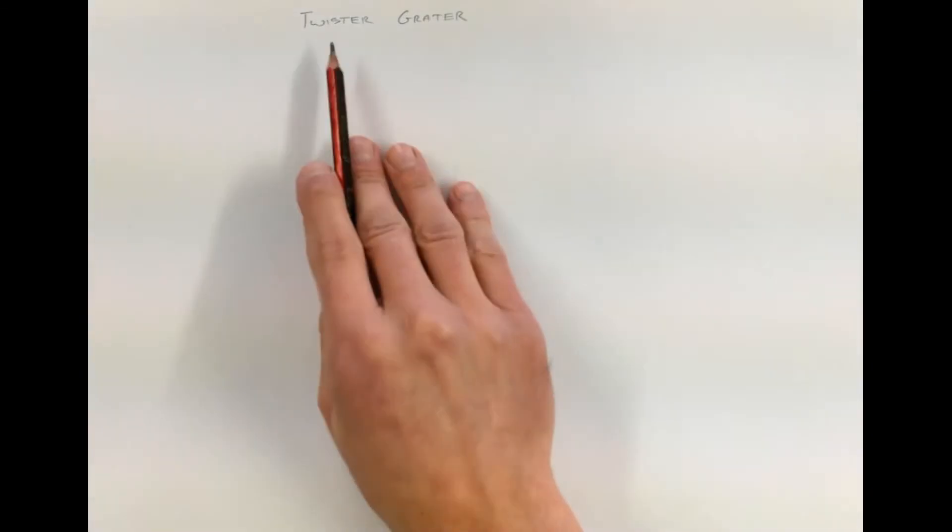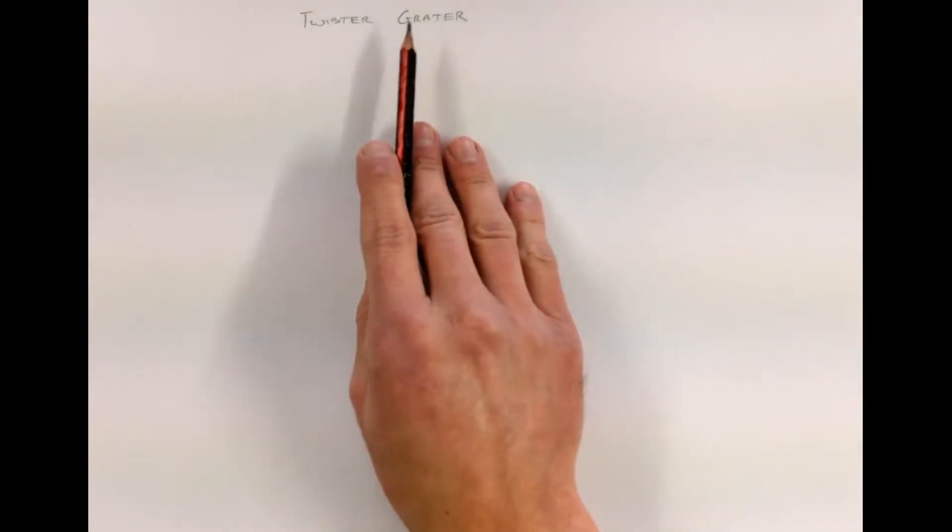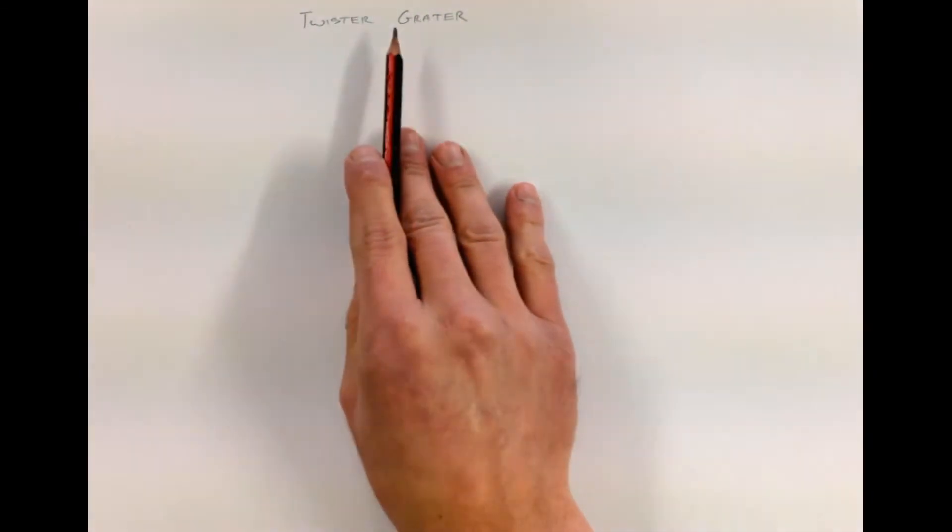We're going to go through sketching out the cheese grater. The design you come up with doesn't really matter, but we're just going to go through the method for coming up with any kind of design. In other words, we want to go through how we'd go about sketching out a design. First thing when you come up with a design is normally give it a name, a working title as it might be called. I've just given this the name Twister Grater, which will just give an idea of the design I'm going to go through.